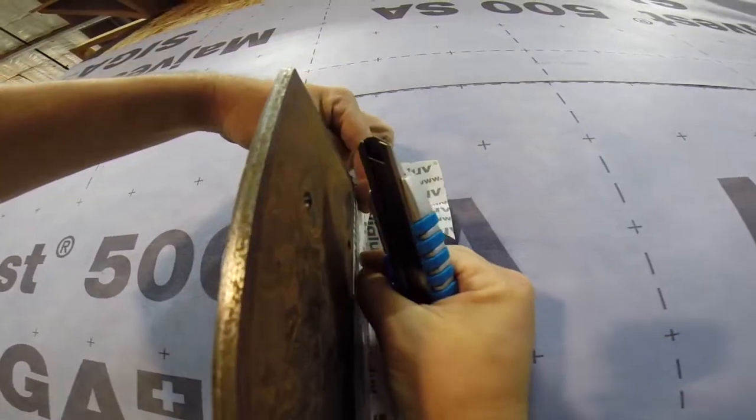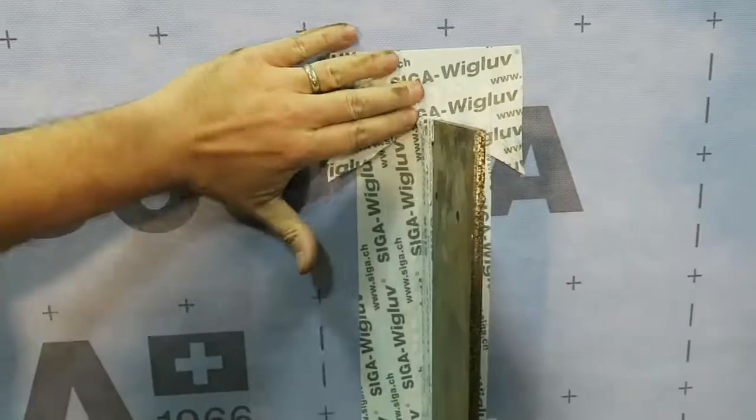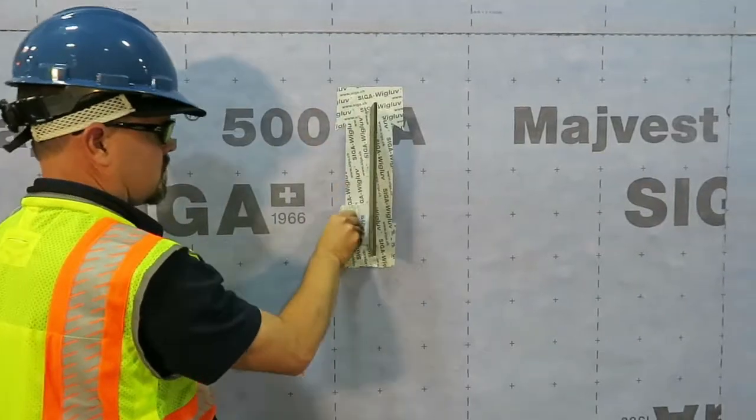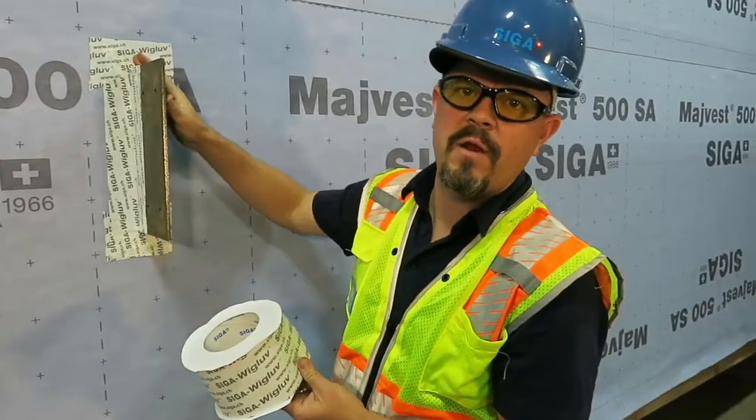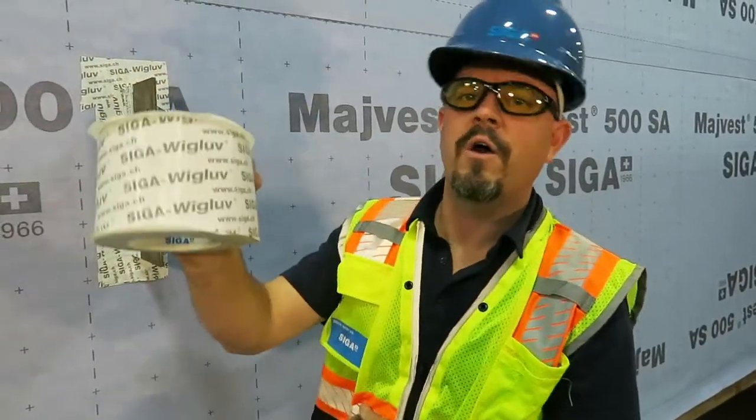45-degree cut, fold the tape down. We've fully sealed our knife plate penetration with the Wigluv 100. Thanks for watching.